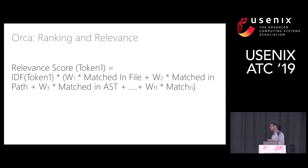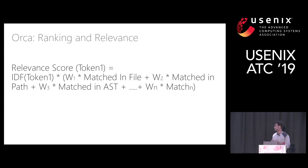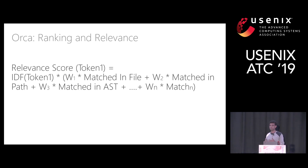Based on the matching, Orca calculates a relevance score. For each token, it takes the IDF value — which signifies how important the token is — and checks where matches are found in the search space. Weightage is also applied: from observation, finding a match in function names or class names is given much more weight than finding a match in a file name or directory name. These weights are dynamic and can keep changing. Finally, the relevance score is used to rank the list of commits or pull requests.